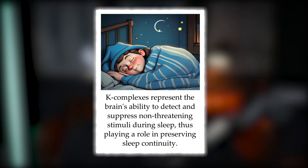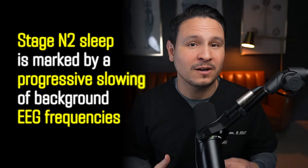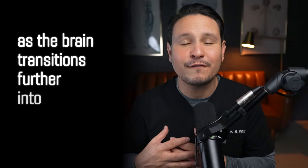K-complexes play a role in preserving sleep continuity. Stage N2 is also marked by a progressive slowing of background EEG frequencies as the brain transitions further into rest. This slowing reflects reduced responsiveness to external stimuli, supporting the onset of deeper sleep stages.